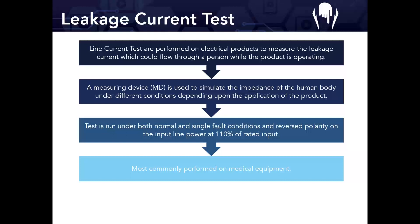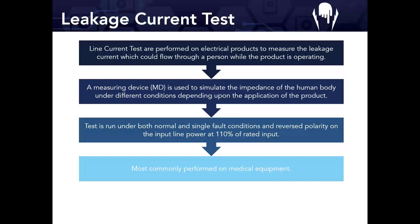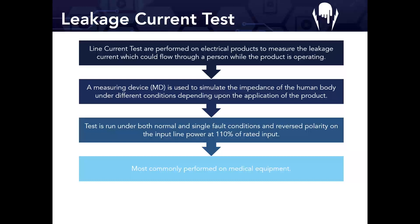Next is leakage current testing. Leakage current tests are performed on electrical products to measure the leakage current that could flow through a person while the product is operating. The key difference from hypot: the product is actually powered on — at 110% of its rated voltage — and a measuring device is used to simulate the impedance of the human body under different conditions depending on the application of the product.